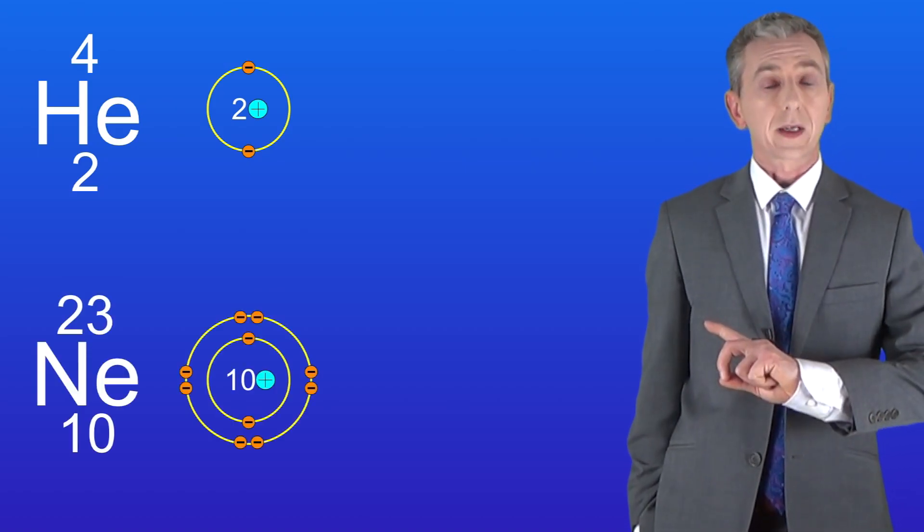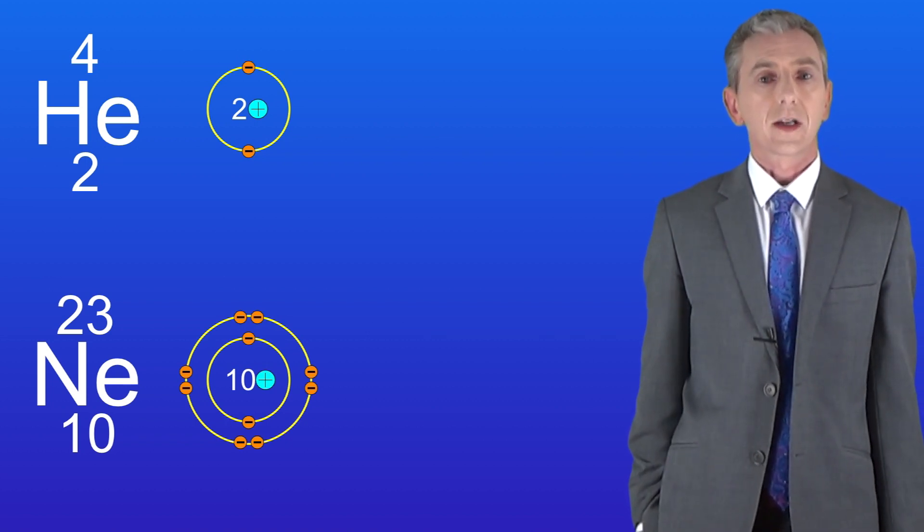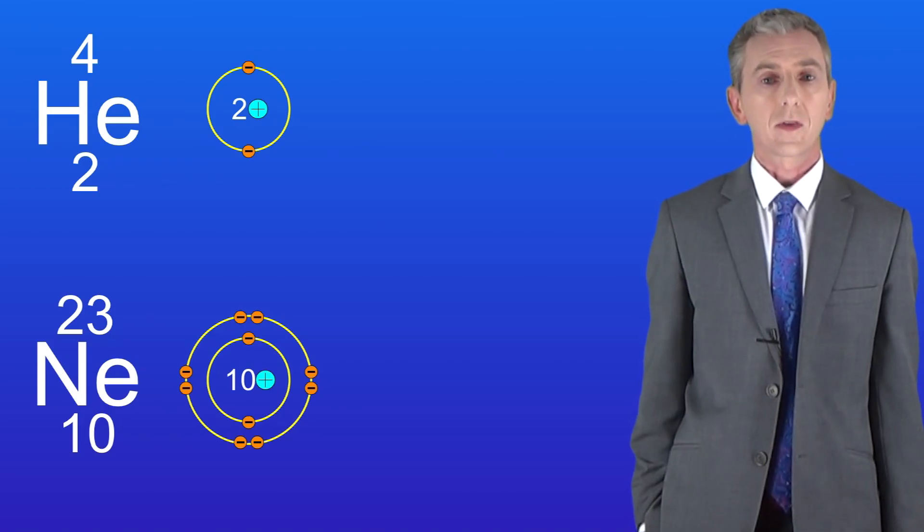This shows the structure of the noble gas neon. Neon's got ten electrons. There are two electrons in the first energy level and eight electrons in the second energy level.